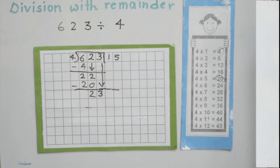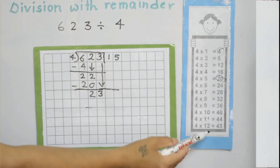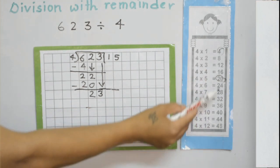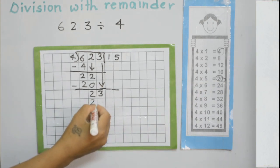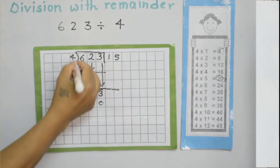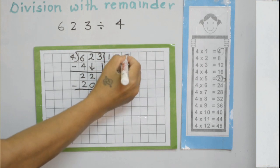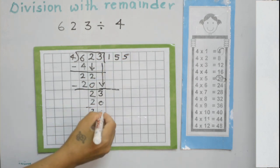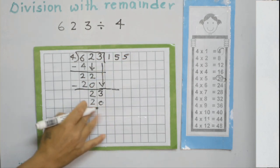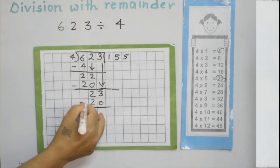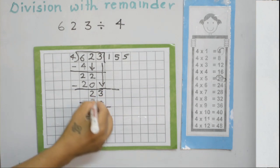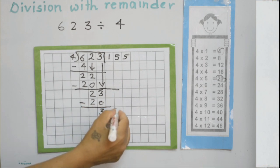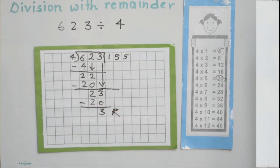Now we have a new number: 23. We don't have 23 as a multiple of 4, so the nearest number is 20. 4 times 5 is 20. Subtract: 3 minus 2 is 3, and 2 minus 2 is 0. So 3 is the remainder. Thank you for watching this video.